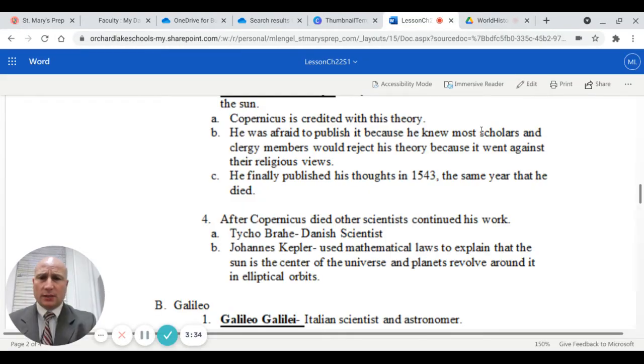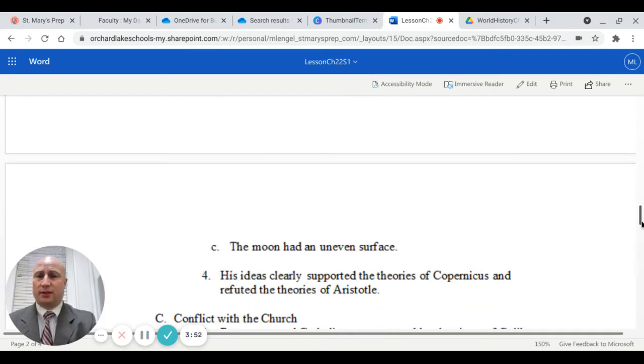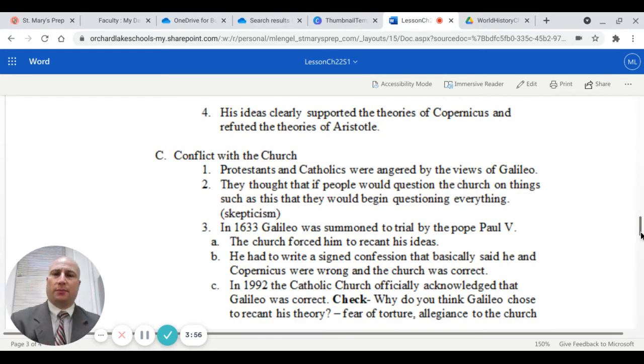We're going to talk next about Galileo. Galileo Galilei was an Italian scientist and astronomer. He used a telescope, one of the early telescopes, to observe the universe. He concluded several things. He says Jupiter has four moons. The sun has dark spots. The moon has an uneven surface. His ideas clearly supported the theories of Copernicus and refuted those of Aristotle.